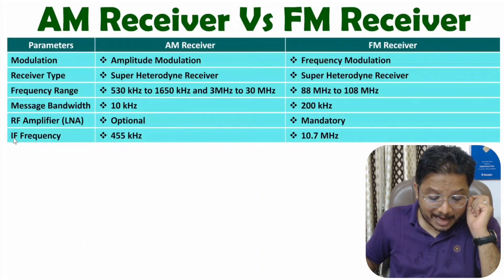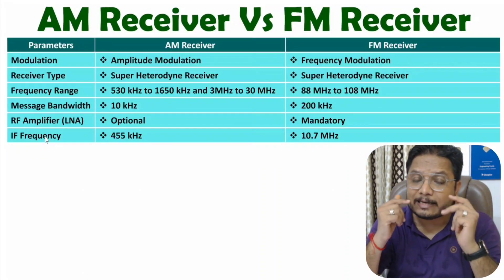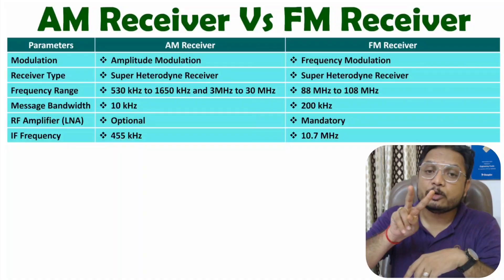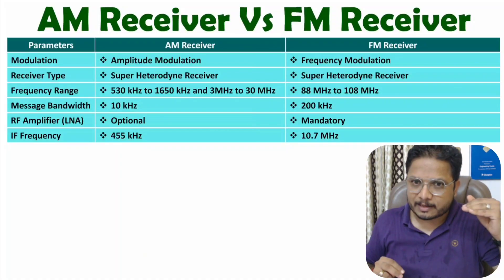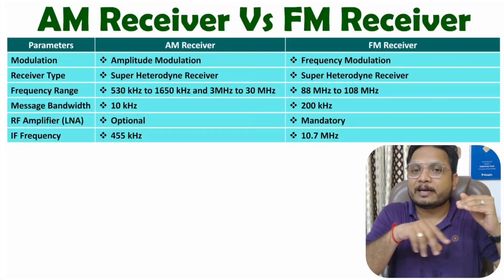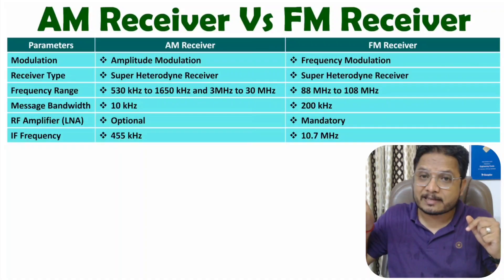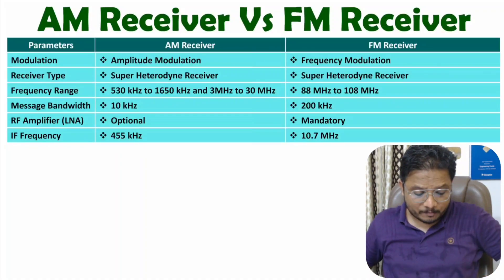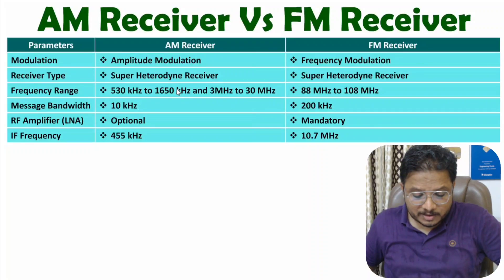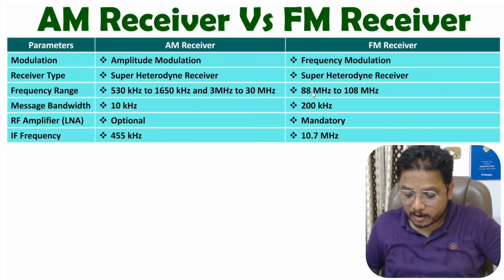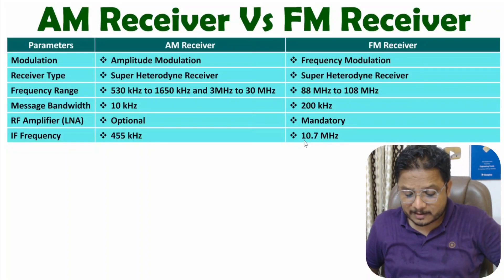The next parameter is IF frequency, which means intermediate frequency. In a super heterodyne receiver, we do frequency conversion twice: the received RF signal is converted into intermediate frequency by the first detector, and that intermediate frequency is then converted into the message signal by the second detector. With AM broadcast (530 kHz to 1650 kHz), the intermediate frequency is 455 kHz. With FM broadcast (88 MHz to 108 MHz), the intermediate frequency is 10.7 MHz.